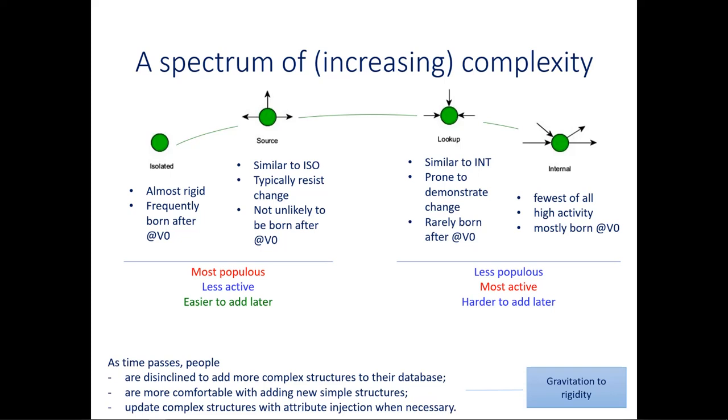We attribute this behavior to a phenomenon that in previous papers, we have christened as gravitation to rigidity. And this means that as the schema ages and the code is built on top of the schema, the developers are disinclined to add more complexity to the structure of the schema. On the contrary, they prefer to add simpler topologies, simpler structures, like the ones on the left hand side. And if they needed to work with the complex structures, they inject, they do it mostly via attribute injection. And we refer you to the paper for more details about that, and what the implications are for us as researchers and teachers.